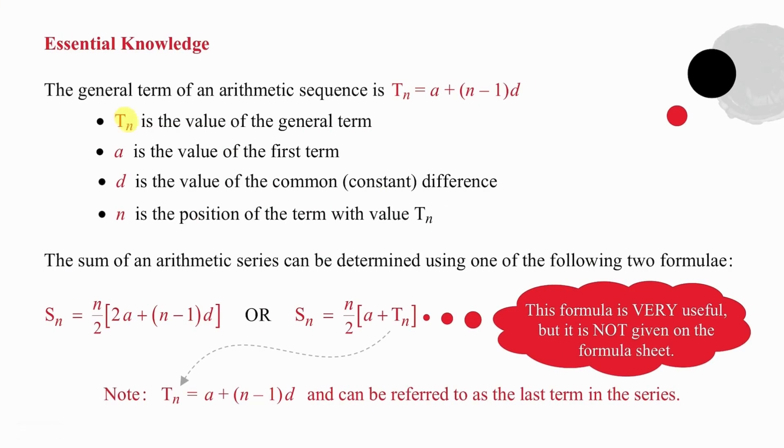A few quick reminders. TN represents the value of the general term, A the value of the first term, D the value of the common difference, and N the position of the term with value TN. There are two different sum formulae for an arithmetic series.